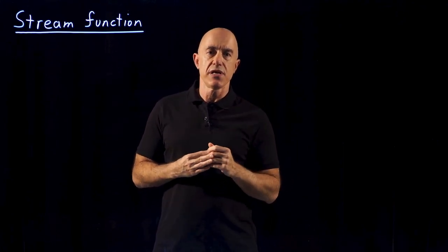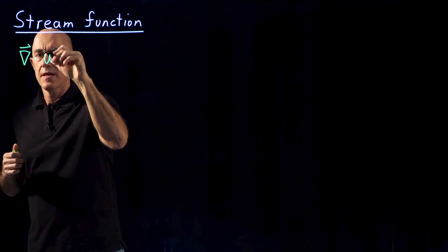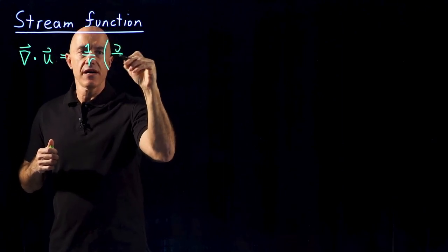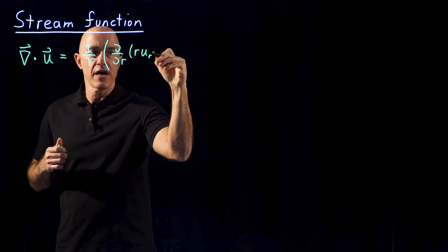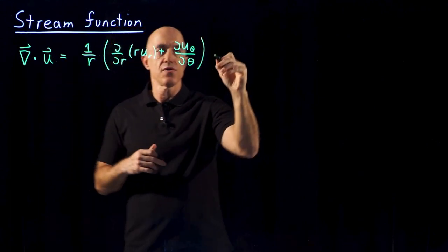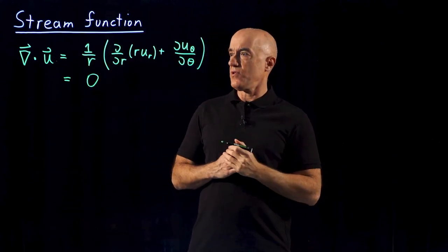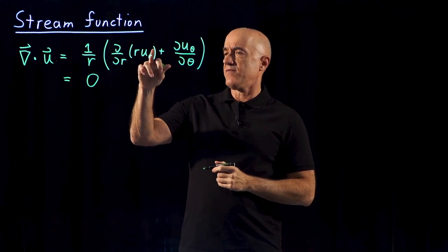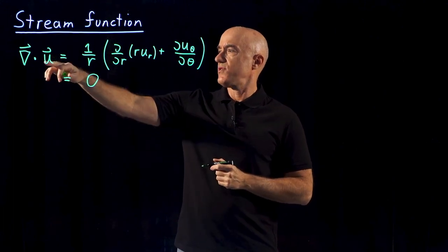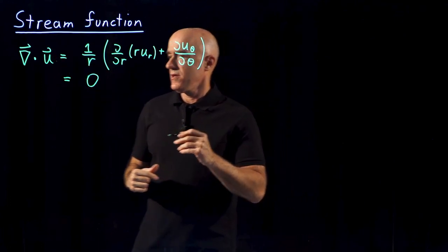We haven't used the continuity equation yet. So we'll start with the continuity equation, del·u. In polar coordinates, that's 1 over r times d/dr of r u_r, plus du_θ/dθ. And we know that this is equal to zero for an incompressible fluid. So we can replace the velocity field by a scalar field called the stream function, in order to directly enforce the zero of del·u.